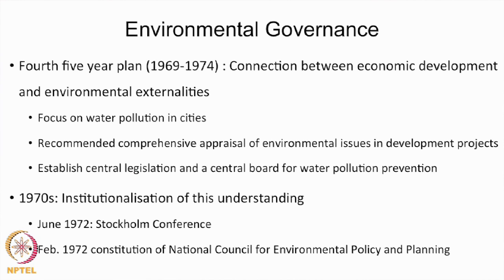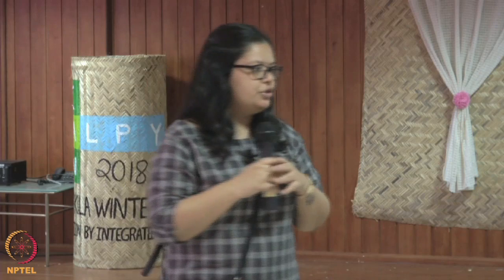The connections between development and environmental externalities were first understood with respect to cities. It was not about conserving the overall environment in general — it was the need because urbanization was actually impacting water bodies. The focus was on water pollution, and the recommendation was to appraise all development projects from the lens of environmental degradation and conservation. This led to the establishment of central legislation — a lot of water-related legislation came into existence — and the constitution of the Central Pollution Control Board and State Pollution Control Boards.